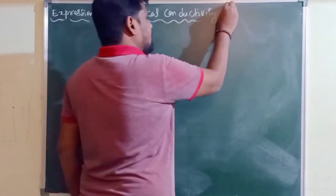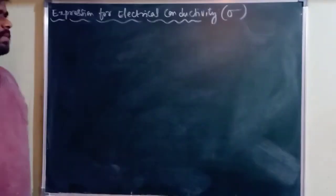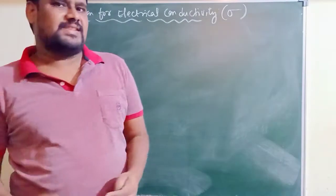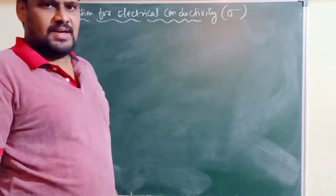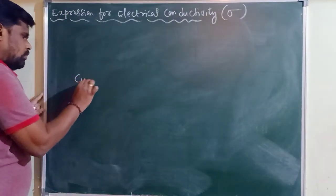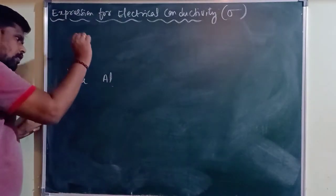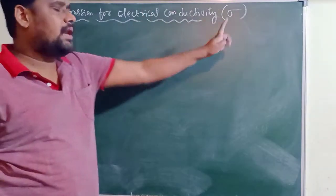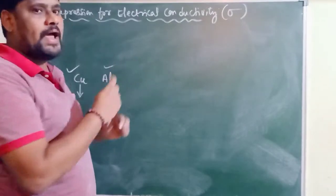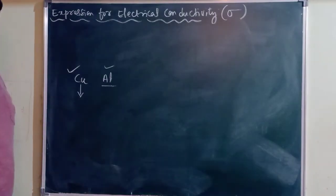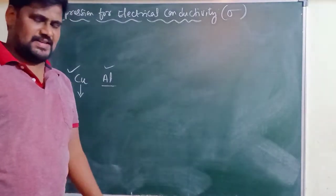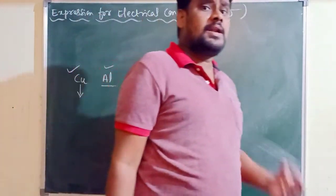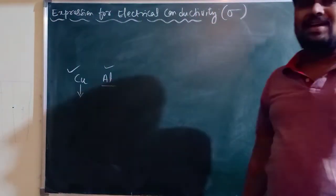This electrical conductivity we generally call sigma. Whether a given material is a good conductor or bad conductor of electricity is decided by the factor electrical conductivity. For example, if copper is a good conductor as compared to aluminium, it indicates that copper has the maximum value of electrical conductivity. Insulators are the bad conductors of electricity, while metals are the good conductors of electricity. Obviously, metals should have a high value of conductivity as compared to insulators.